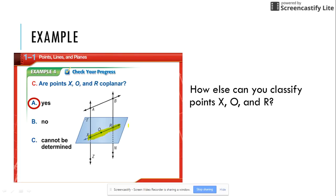How else can you classify points X, O, and R? X, O, and R are all on the same line, therefore they are also collinear.